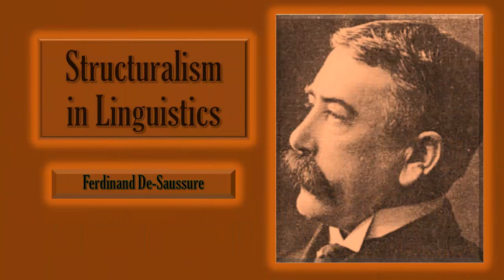Structuralism in linguistics was introduced by Ferdinand de Saussure. Saussure introduced an entirely new attitude to linguistic approaches, and this linguistic approach later found philosophical and cognitive aspects. In his Course in General Linguistics, he described the structure of language in relation to reality. The basis of his thoughts focused on the relationship between the signifier and the signified.